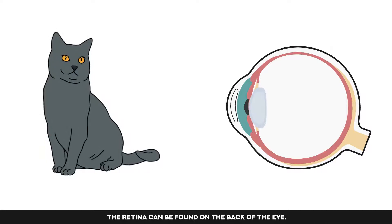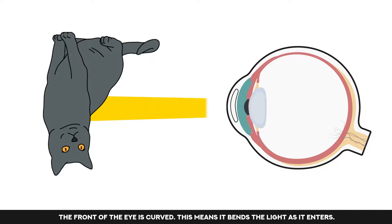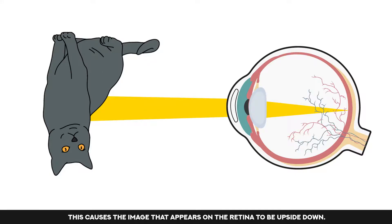The retina can be found on the back of the eye. The front of the eye is curved. This means it bends the light as it enters. This causes the image that appears on the retina to be upside down.